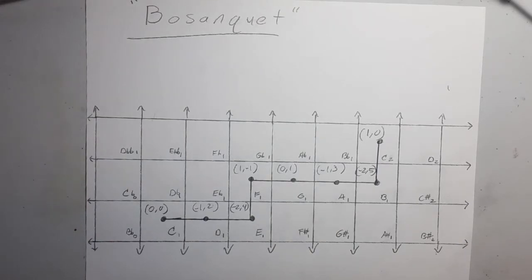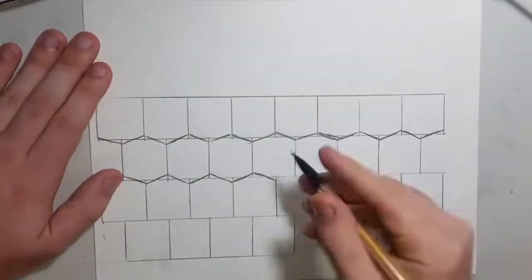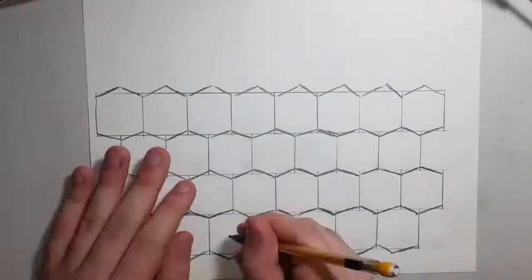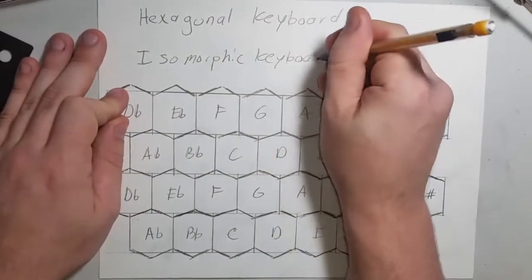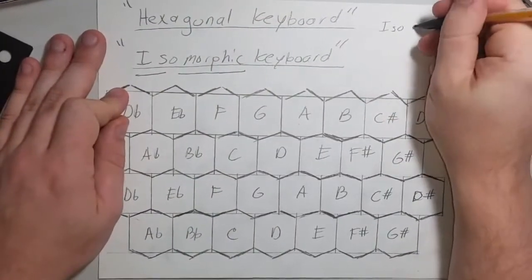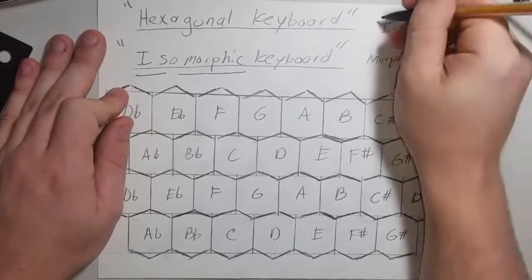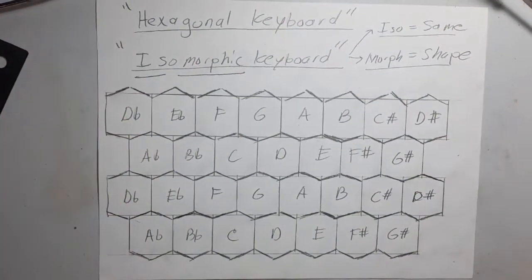When one arranges notes in a 2D grid like that, the result is what's called a generalized keyboard. Often the grid is hexagonal, which is why they're also referred to as hexagonal keyboards, and since the layout is regular, where any musical structure like scale, chord, or entire song retains its shape regardless of starting point, in stark contrast to the piano, they are also referred to as isomorphic keyboards, where ISO means same and morph means shape.